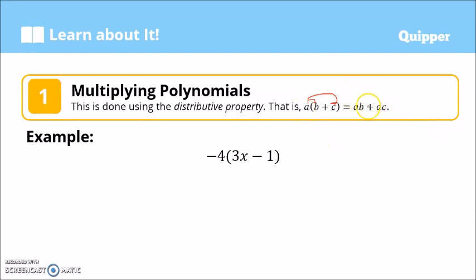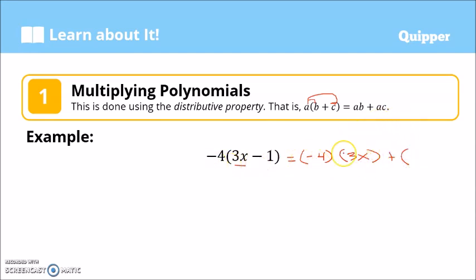Let's have this example: negative 4 times (3x minus 1). That is equal to negative 4 times the first term, 3x, and then plus negative 4 times negative 1. Take note that we distributed negative 4 to 3x and to negative 1.